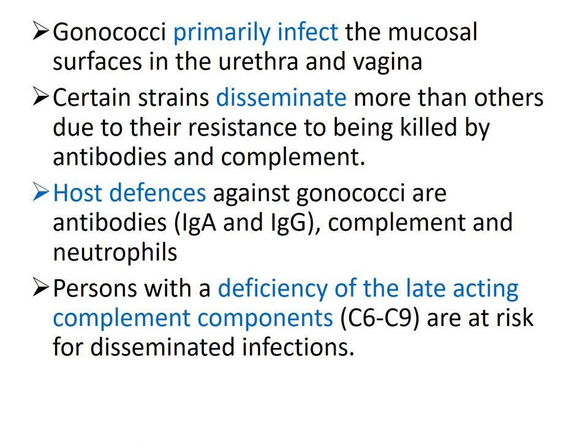Gonococci primarily infect the mucosal surfaces in the urethra and vagina. Certain strains disseminate more than others due to their resistance to being killed by antibodies and complement. Host defenses against gonococci are antibodies IgA and IgG, the complement system, and neutrophils. Persons with a deficiency of late-acting complement components — C6 to C9 — are at higher risk for disseminated infections.